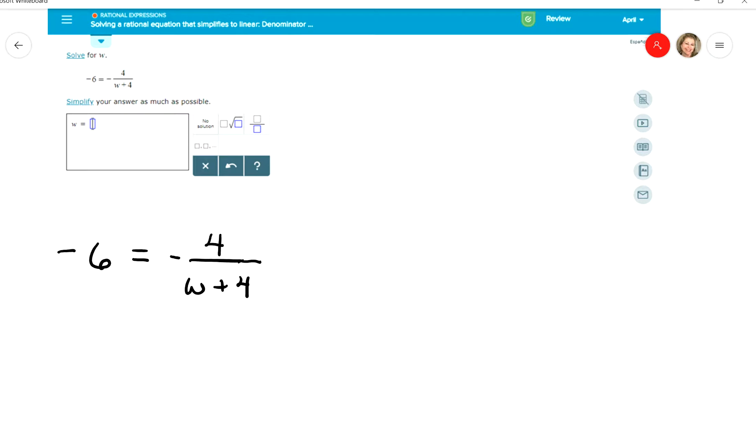But here my denominator is W plus 4. So I'm going to have to multiply both sides of the equation by W plus 4.